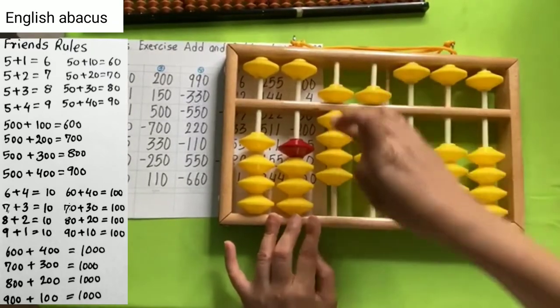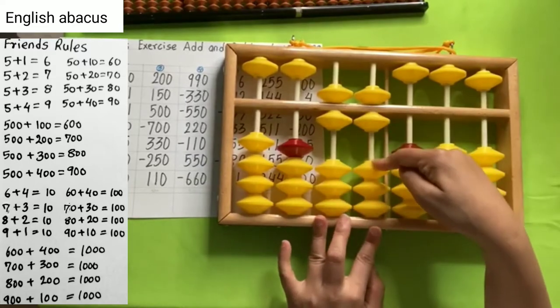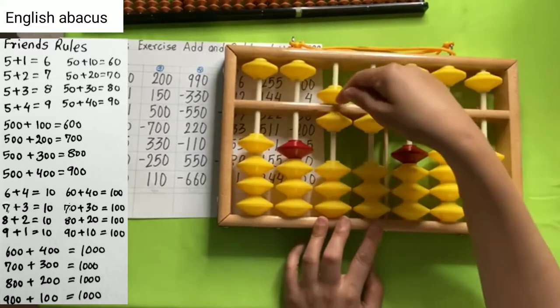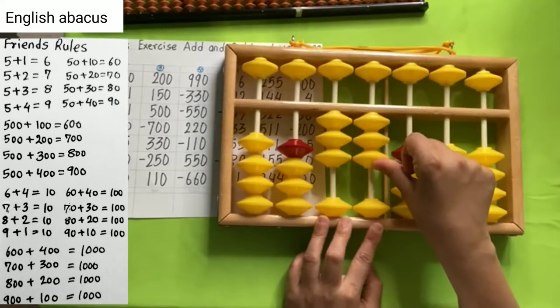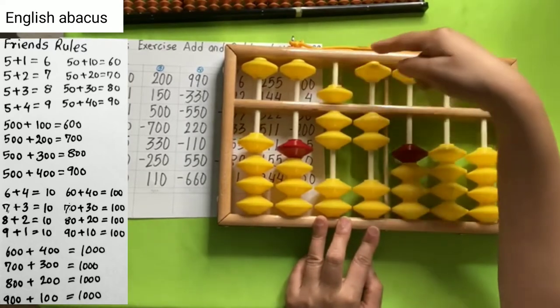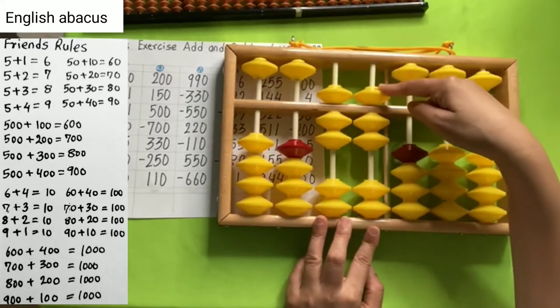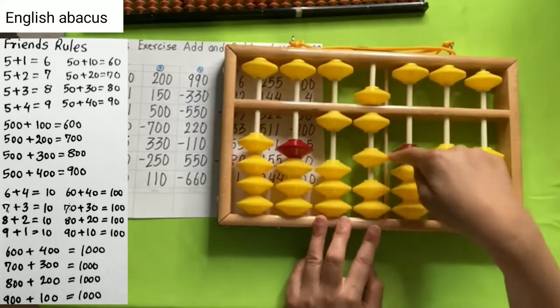Number 4. 990. Reduce 330. Reduce 550. Add 220. Reduce 110. Add 550. Reduce 660. And your answer is 110.